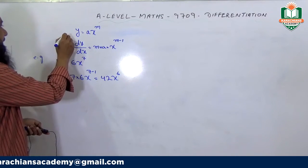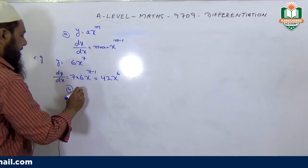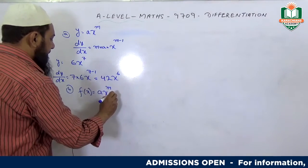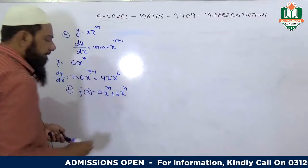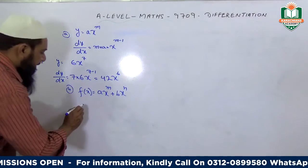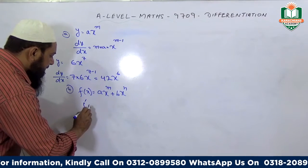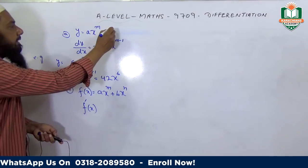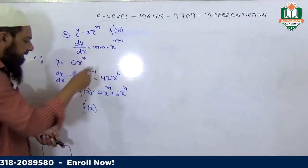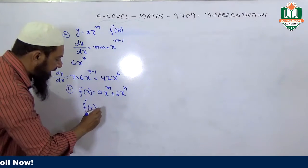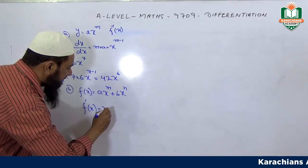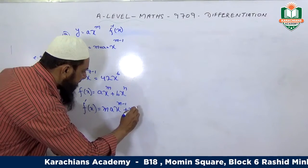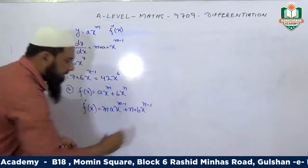Another formula: let's suppose f(x) equals ax^m plus bx^n. Differentiate this function with respect to x. f'(x) equals m times ax^(m-1) plus n times bx^(n-1).